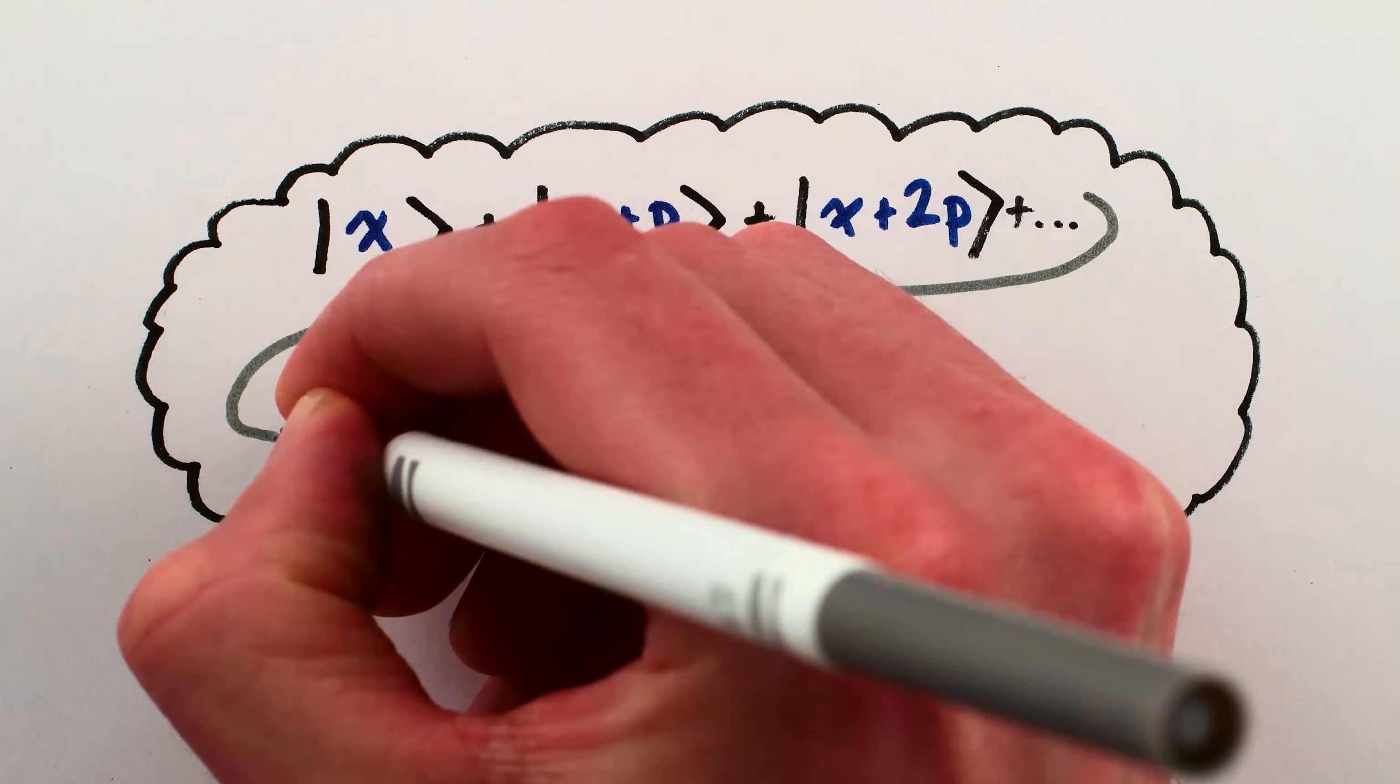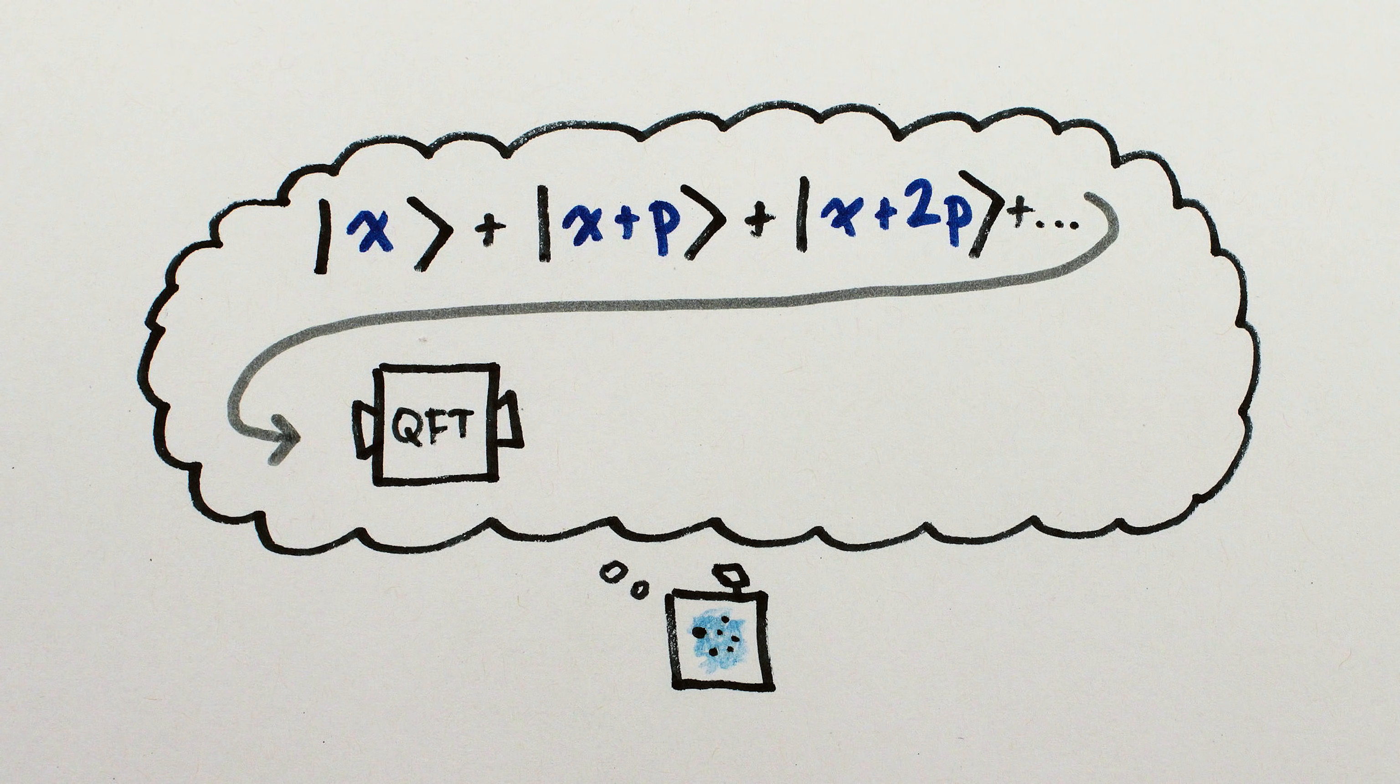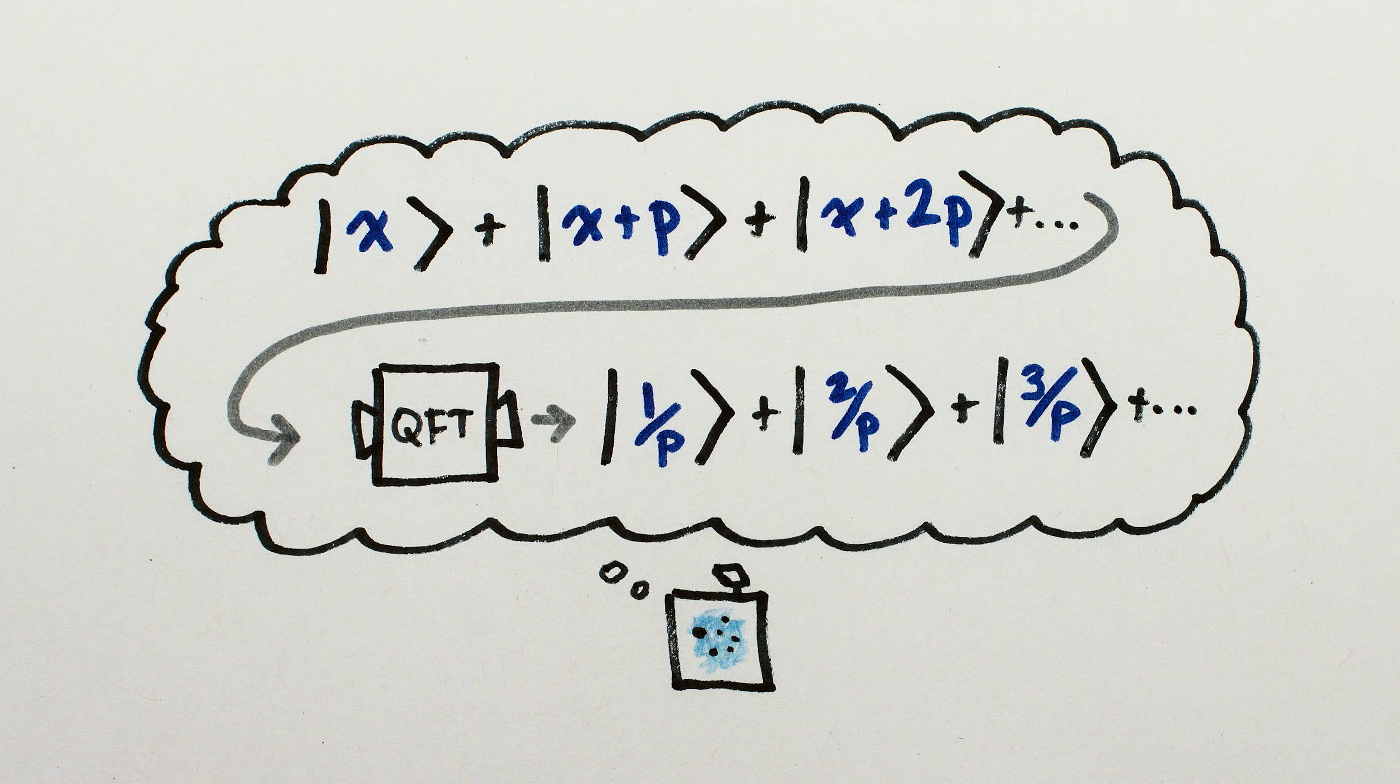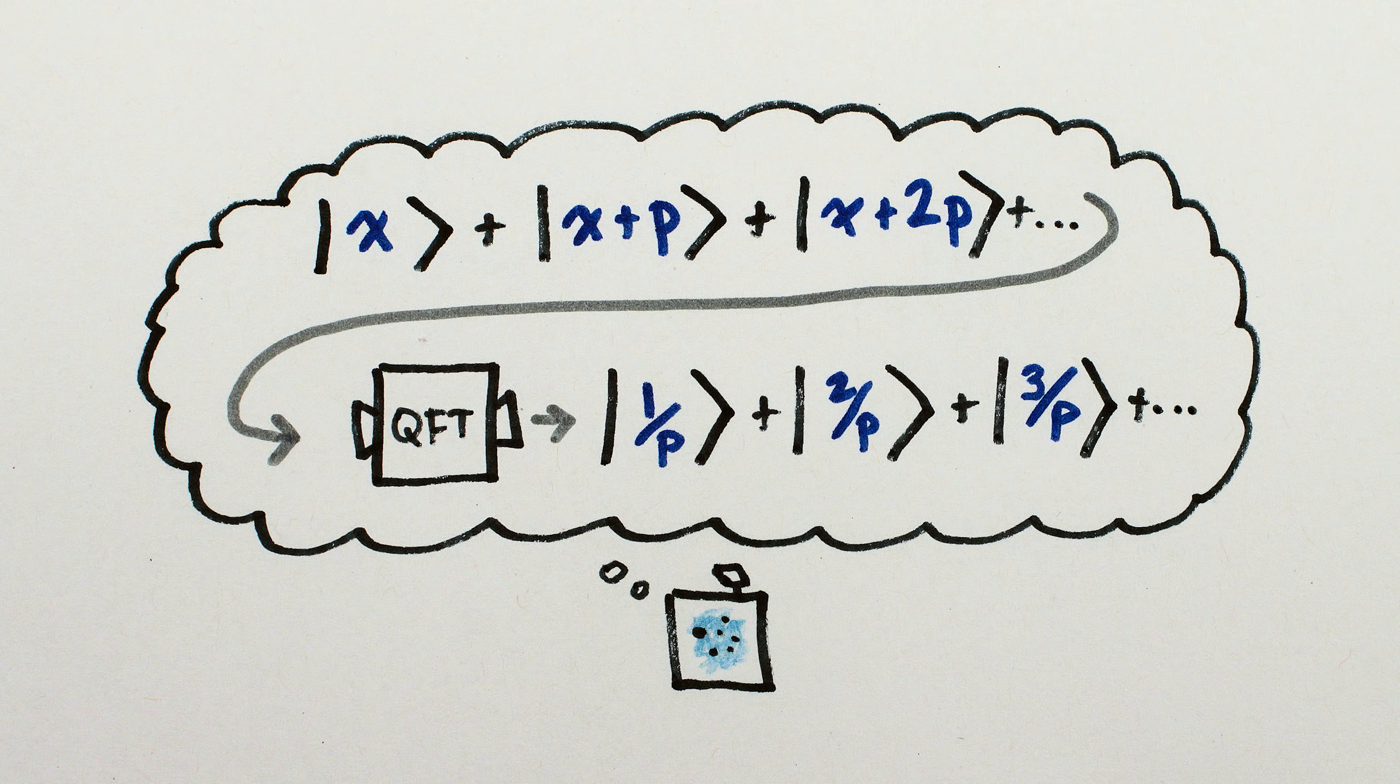The next step is to put the superposition through a quantum Fourier transform, which will pick out that frequency, and result in a superposition of 1 over p, plus 2 over p, plus 3 over p, and so on. This is a part I glossed over in the main video, but for technical reasons, the quantum Fourier transform doesn't just output 1 over p. It outputs a superposition of multiples of 1 over p.